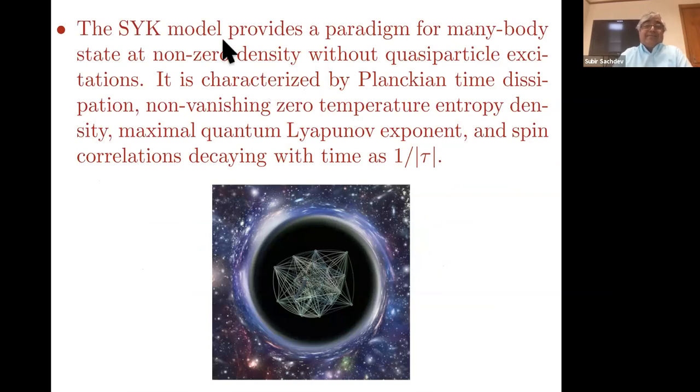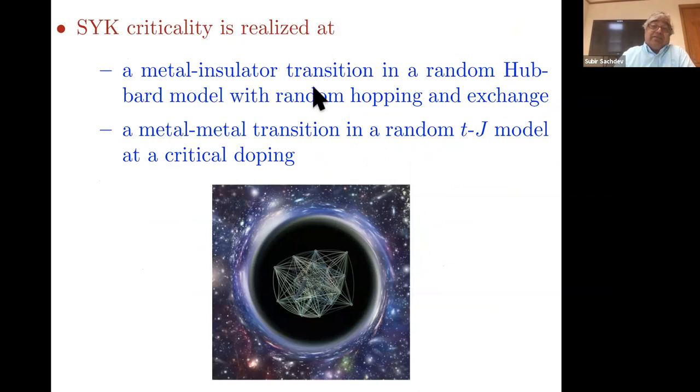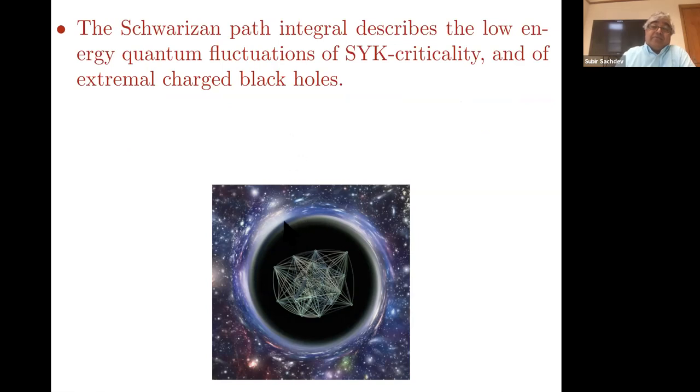So that's really all I have to say. So I introduced the idea of SYK criticality. It has a property of no quasi-particle excitation, Planckian time dissipation, non-zero temperature entropy, maximum quantum Lyapunov exponent, and spin correlation decaying as one over tau. And this is realized at the metal-insulator transition and the metal-metal transition of the infinite range t-J-U model, and also connects up to the quantum fluctuations of charged black holes. Thank you.